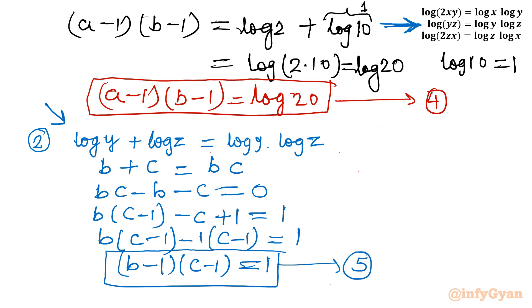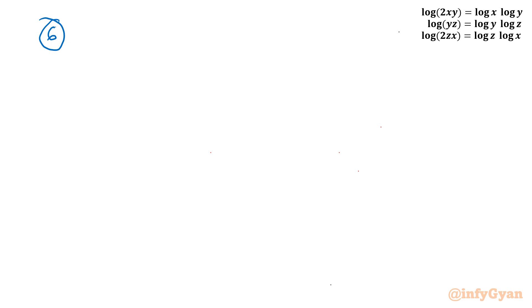For the last equation, equation 3 has the same structure as equation 1 with only variable changes, so we write it directly. Equation 6 is: (c − 1)(a − 1) = log 20.